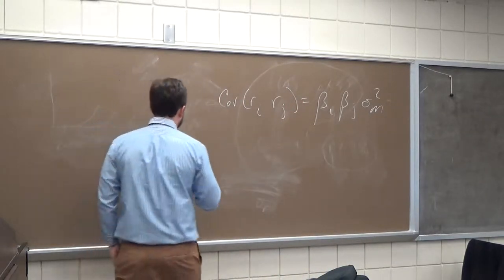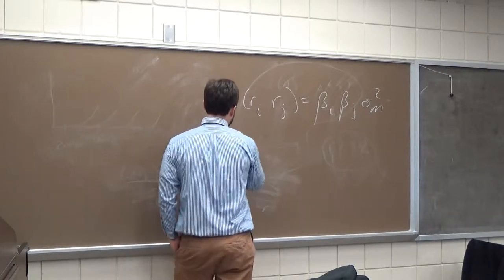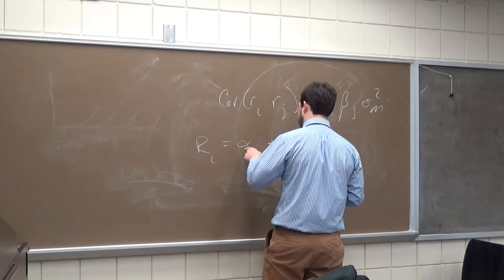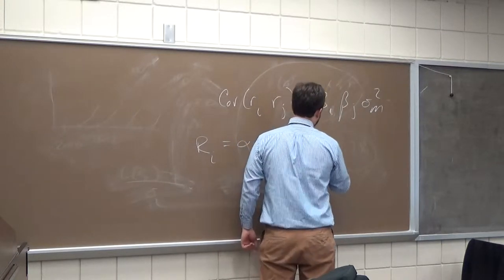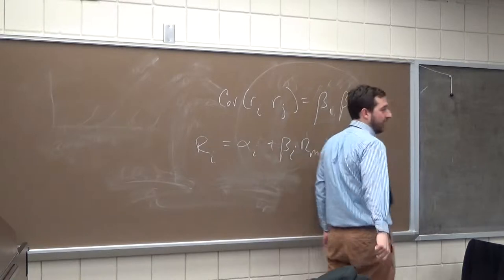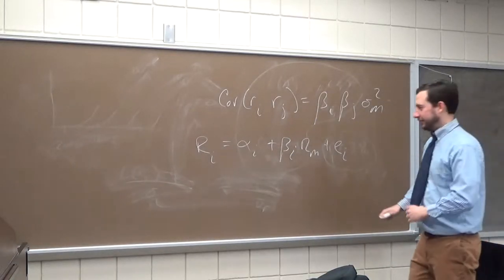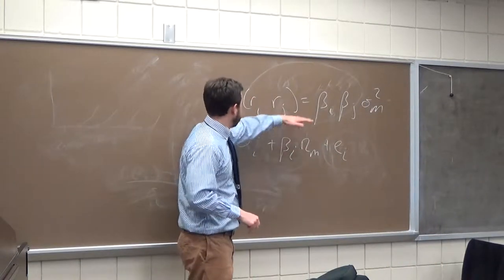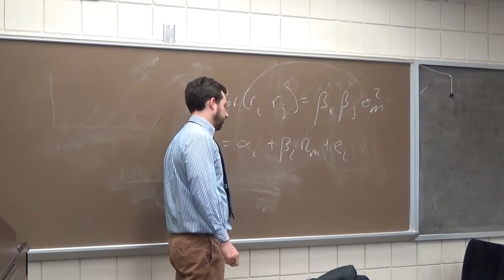But we ended the class noting there was some problem with this. The index model we're using is: return on stock I equals alpha I plus beta I times the return on the market, plus an error term. And what was the problem with this? If this is true, it's an excellent way to estimate covariances — but is it possible that this isn't true?